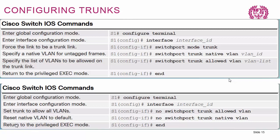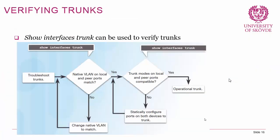Configuring trunks is a two-way process. First, go into the interface and instead of 'switchport mode access', do 'switchport mode trunk'. Then configure the native VLAN with 'switchport trunk native vlan' followed by the VLAN number. You can also specify which VLANs are allowed to traverse the trunk link with 'switchport trunk allowed vlan' and a comma-separated list — this adds a layer of security. To remove trunk configuration, use 'no switchport mode trunk' or 'no switchport trunk allowed vlan' or 'no switchport trunk native vlan'.